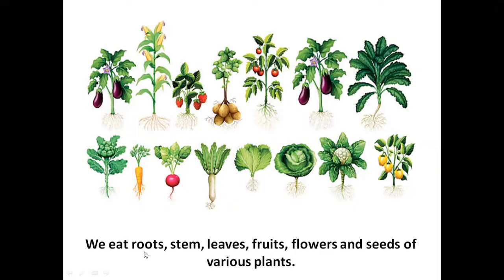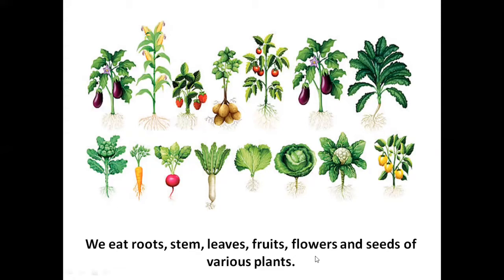We eat roots, stem, leaves, fruits, flowers and seeds of various plants. We learned about the parts of plants — we eat different parts depending on which plant we are eating. Like you see in the picture, potatoes and radish are roots, cauliflower is the flower part, spinach are the leaves, tomatoes and brinjal are the fruit part, and wheat are the seeds of the plant.